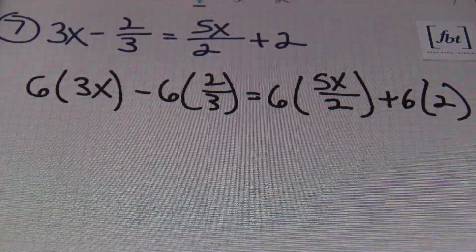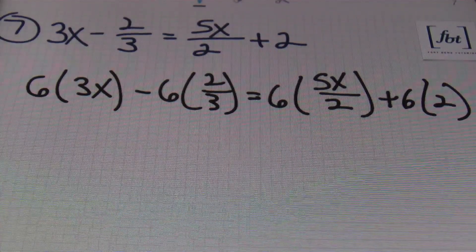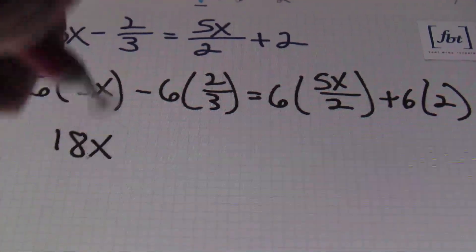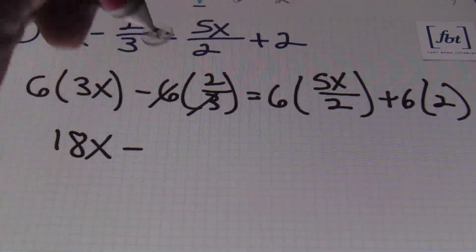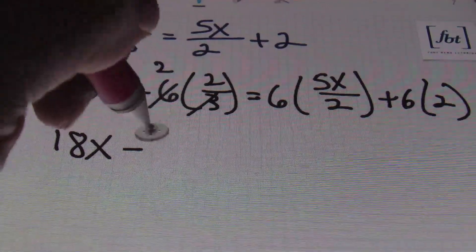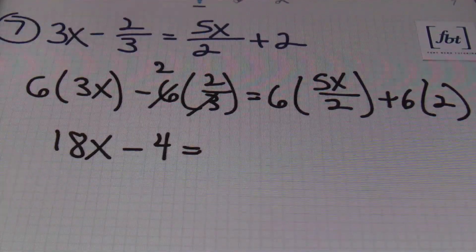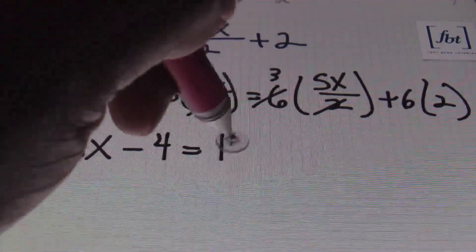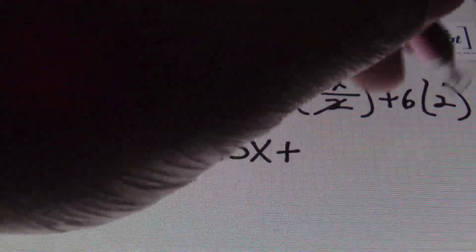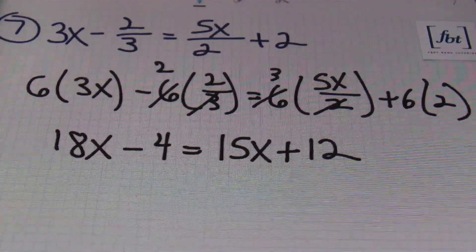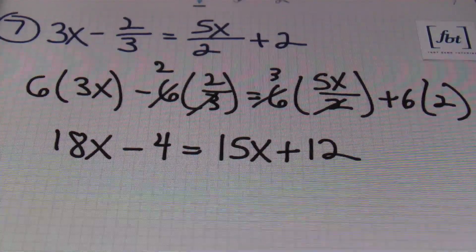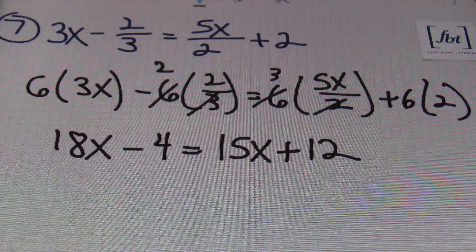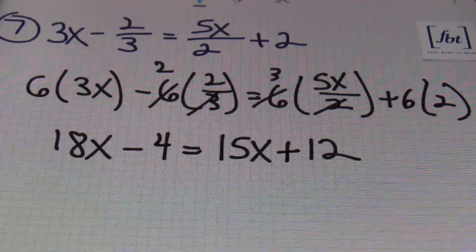I'll have six times three x minus six times two-thirds equals six times five x over two plus six times two. Simplifying: six times three x is 18x; three goes into six twice, so two times two gives me four. On the right side, two goes into six three times, so three times five x is 15x, plus six times two which is 12. So my rewritten equation is 18x minus four equals 15x plus 12, after multiplying every single term by the least common denominator.